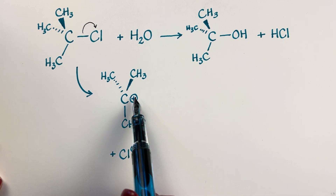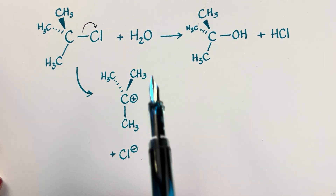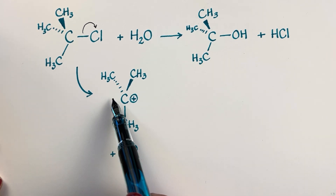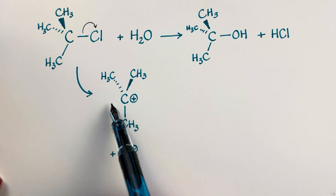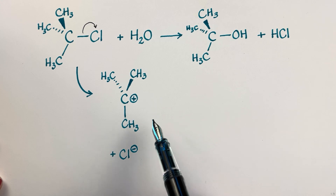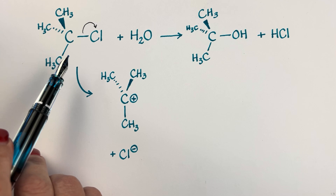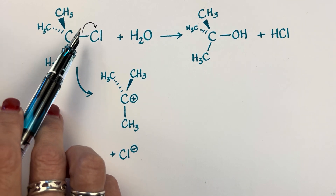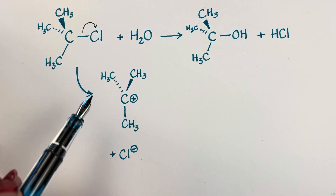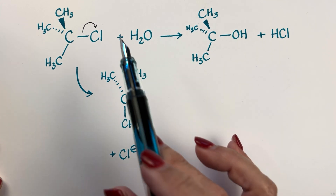If the nucleophile comes in on the side where the leaving group left, then we get what's called a retention product. If it comes in on the other side, then it is an inverted product. That has a lot more to do with stereochemistry. We are not going to be considering in detail the implications of stereochemistry because we have an achiral carbon in this case. In this video, we're focusing on mechanism for SN1 reactions.